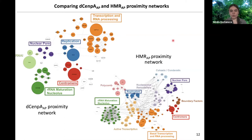We decided to focus on two sets of candidates found in proximity to Drosophila CENPA and HMR. One of those candidates is CENPC. Drosophila CENPC is a very well-described interactor of both HMR and CENPA, and its role in CENPA incorporation has been very well documented. However, what we're interested in is the architecture of the chromocenter, and the role of CENPC in the structure of this domain has not been very well described. We decided to fill in this gap.